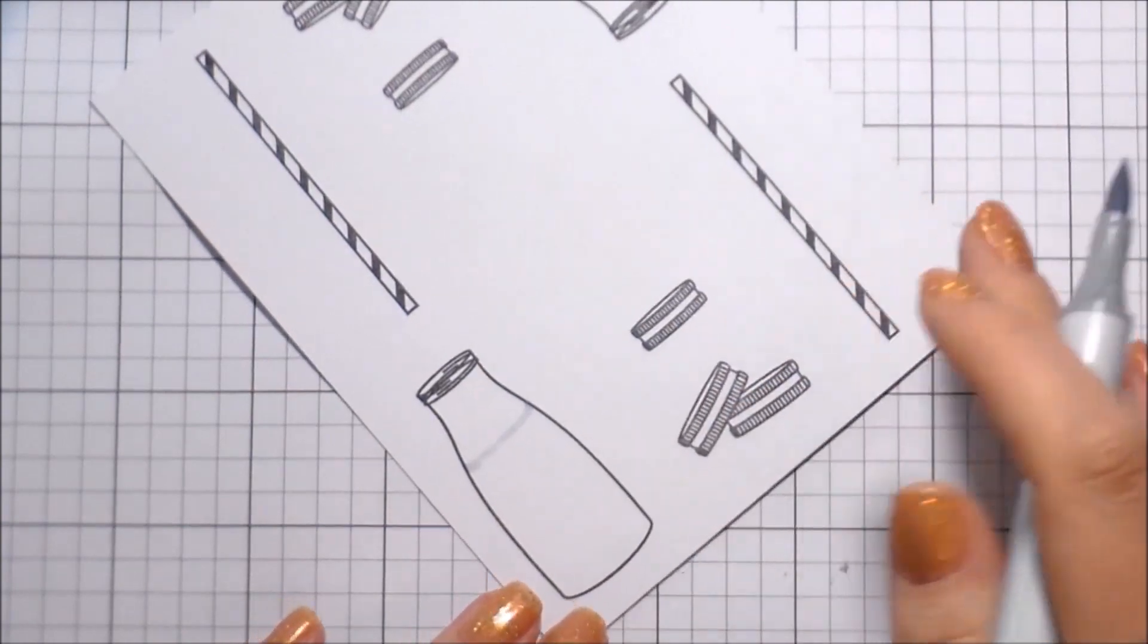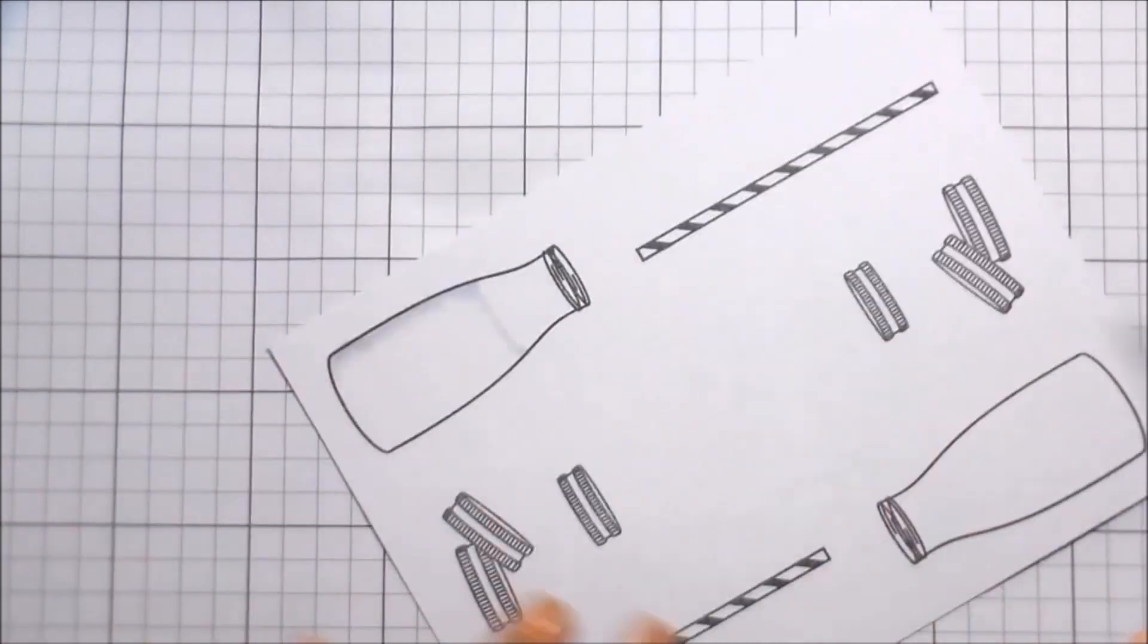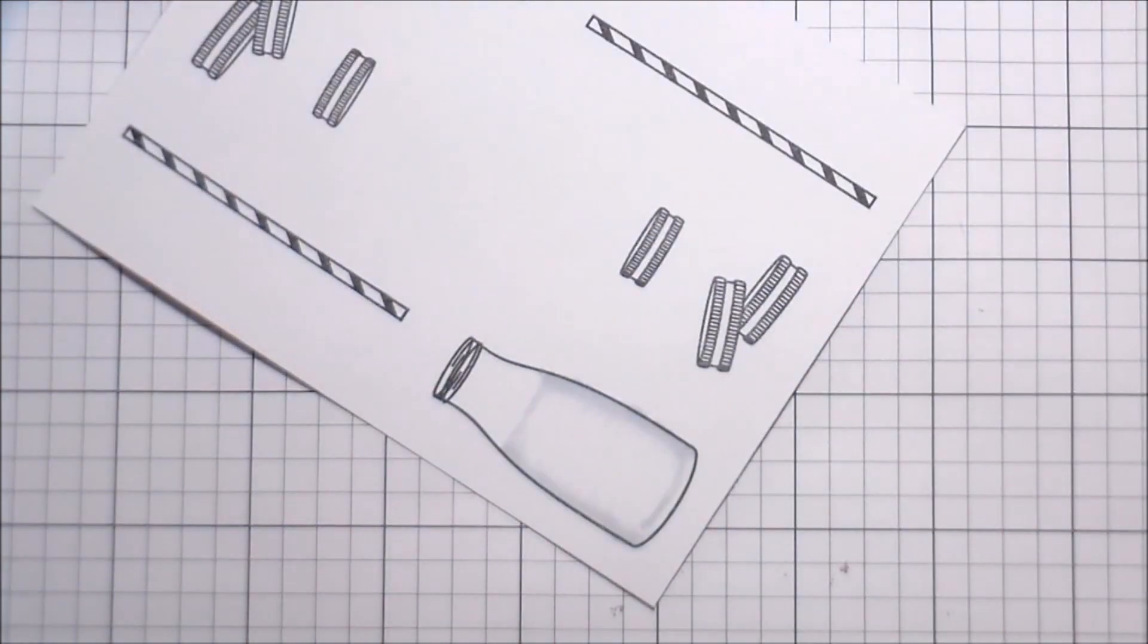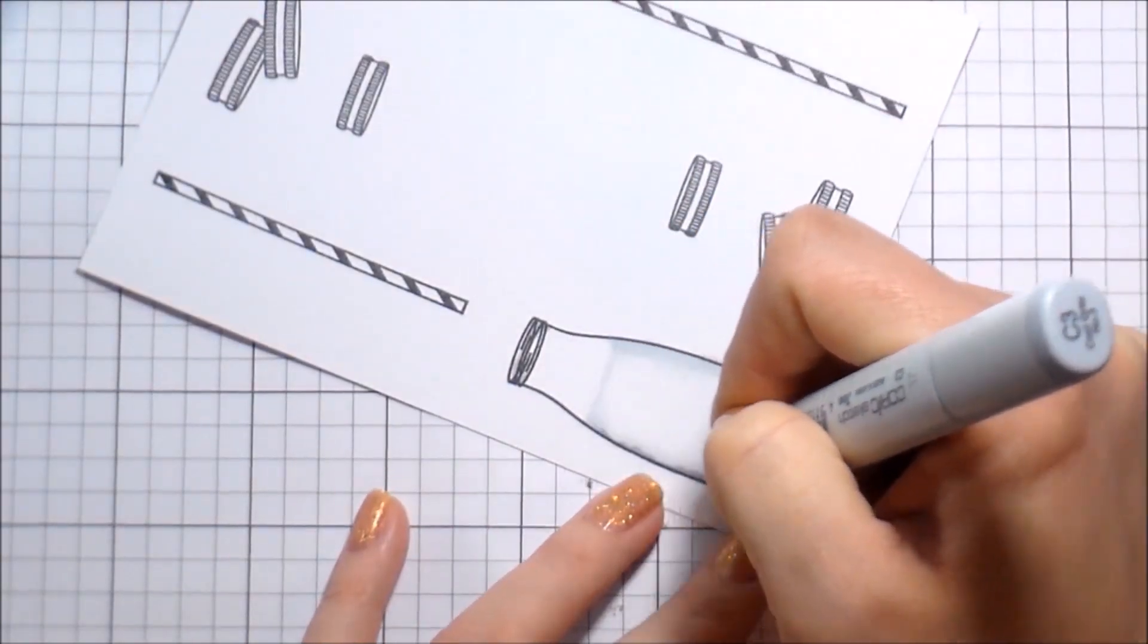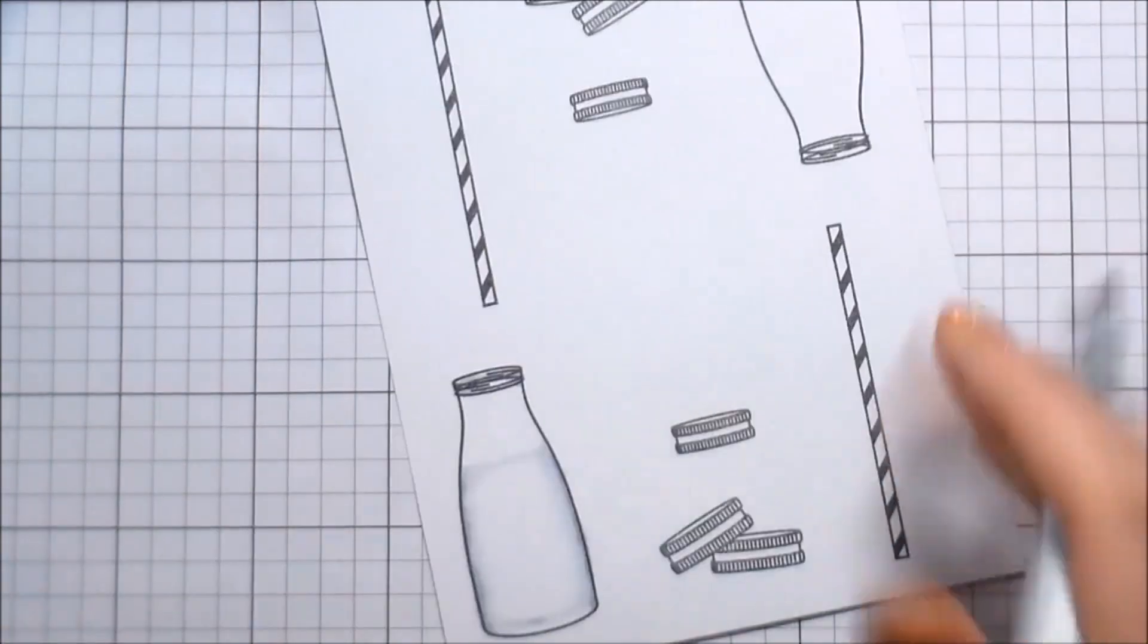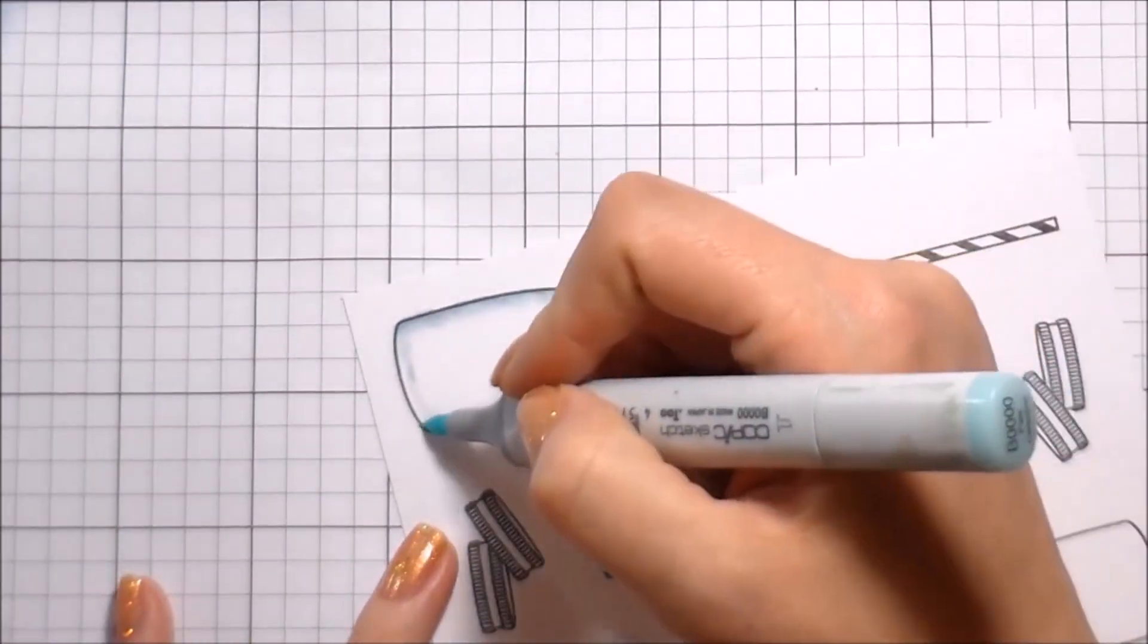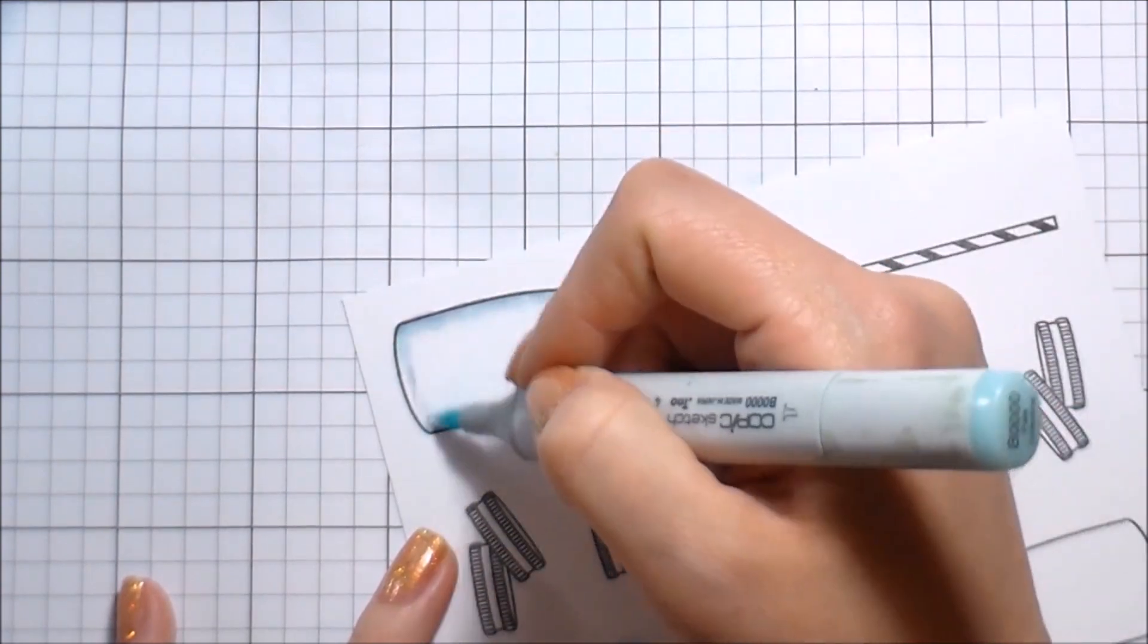When I was coloring these, I was thinking basically of my husband and my son. This one I'm going to color as if it's just white milk in this container. I'm using a C1 to start. I gave myself a little line of where I thought the milk would stop, and then I'm going to add shading to the left and the right of the bottle. I'm going to add a little bit of shading up at the top with a C3 because that area would be darker where the glass is more gathered.